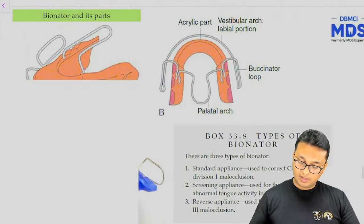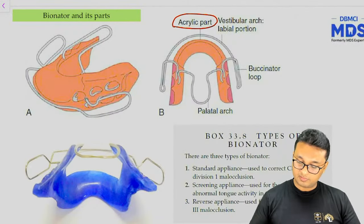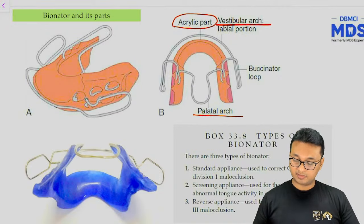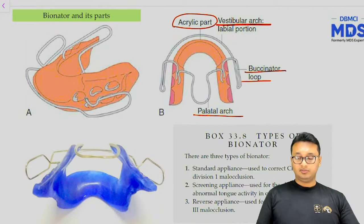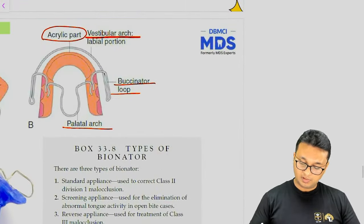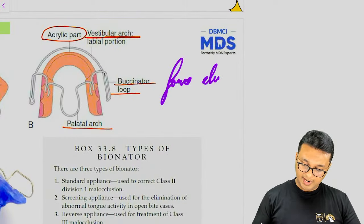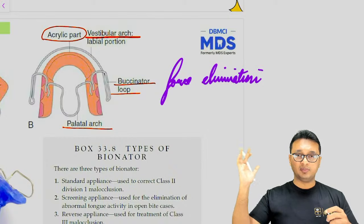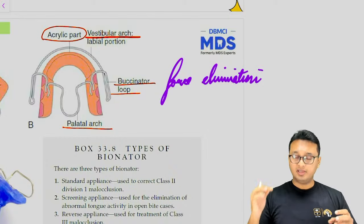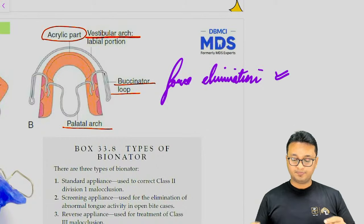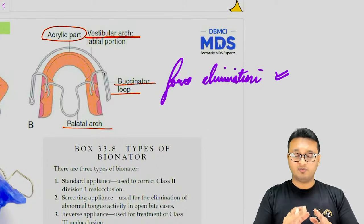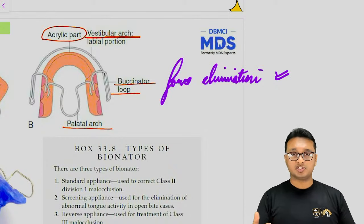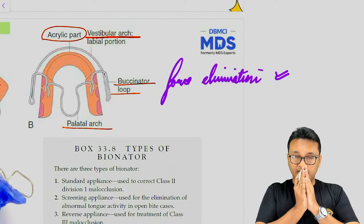The parts of the Bionator include the acrylic part, the vestibular arch (labial portion), the palatal arch (omega-shaped), and buccinator loops. It works on the principle of force elimination — the buccinator loops keep the teeth away from the adverse forces of the buccal musculature. It also works on force application: a bite is taken in a forwardly protruded mandibular position (bite jumping), keeping the mandible in a forward position.